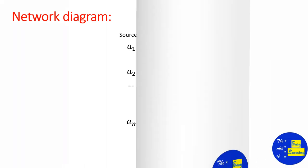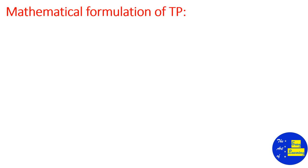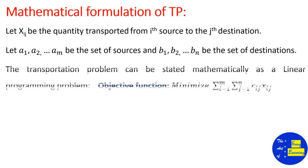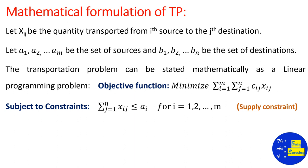Now let us define the mathematical formulation of the transportation problem. The transportation problem is a special case of linear programming problem, so we can express it as an LPP. Let xij be the quantity transported from source i to destination j, and cij be the cost of transporting items from source i to destination j. The objective function is: minimize double summation of cij·xij. Here we are minimizing cost; if considering profit, the objective function becomes a maximization type.